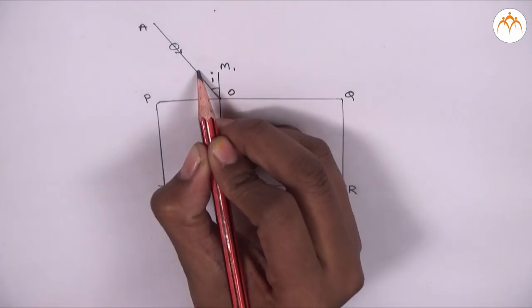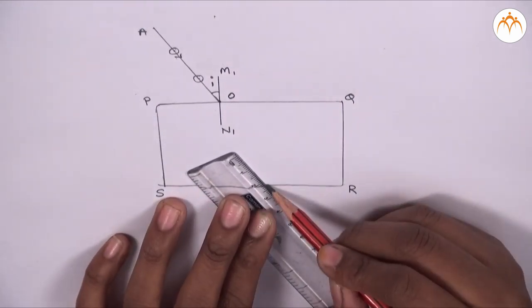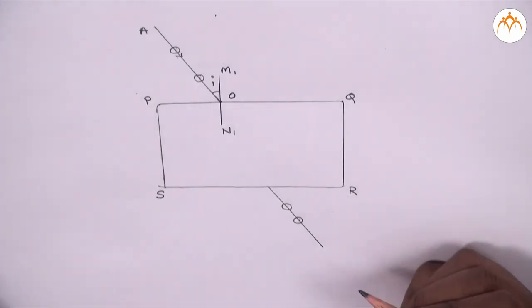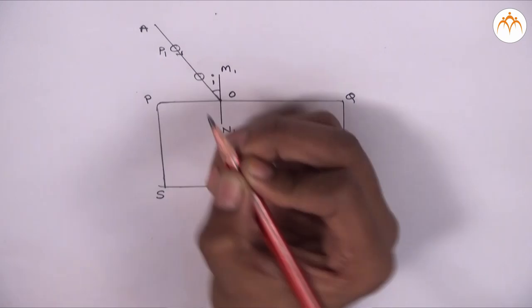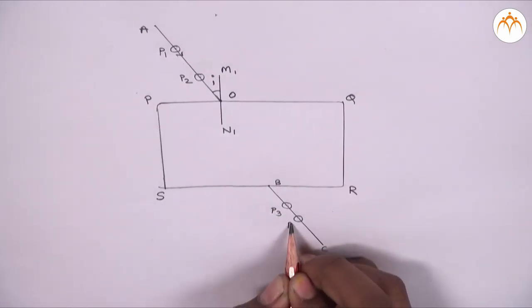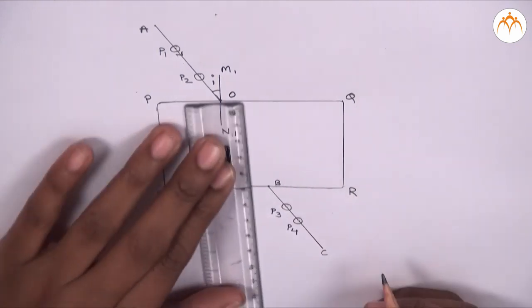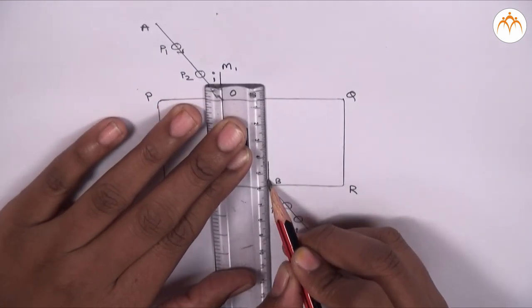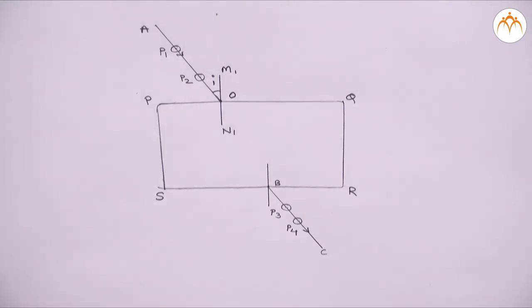We will get point of intersection between SR and this ray called emergent ray. Let us call this emergent ray BC where B is the point of intersection between SR and the emergent ray. We draw normal or perpendicular to SR at point B and name it M2 N2.